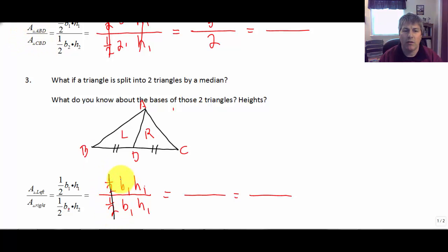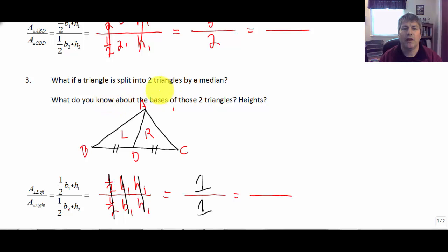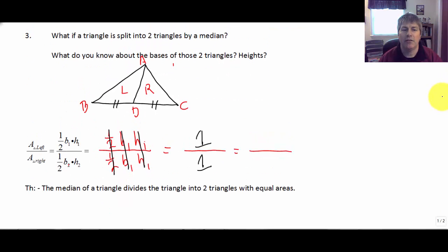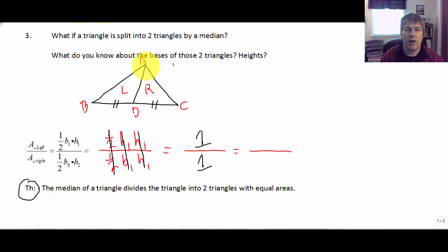So in this example, base one equals base two and height one equals height two. When we calculate the areas of both, the bases, heights, and one-halves all simplify and we're left with one over one. So what happens if we split a triangle into two triangles with a median? It creates two triangles of equal area. The median of a triangle divides the triangle into two triangles with equal areas — and that is a new theorem. It should make sense because we have two triangles with the same base and the same height.